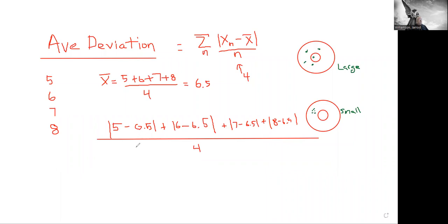5 minus 6.5 is negative 1.5. I have to take the absolute value of that, so it's a positive 1.5. Plus 6 minus 6.5 is negative 0.5. But I have to take the absolute value of that, so it's positive.